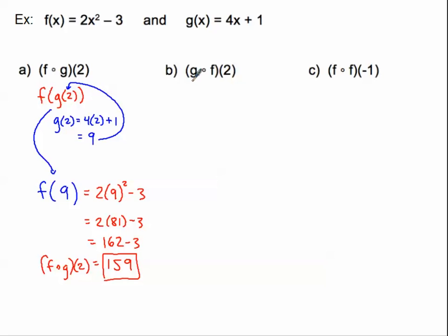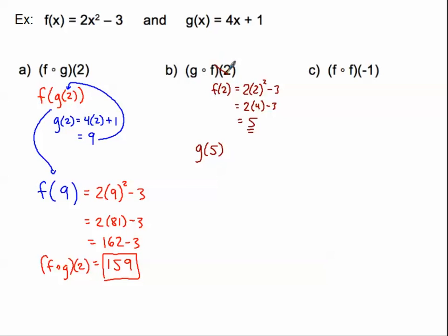Now we're talking about g of f of 2 — it's the exact reverse. Some people might think we get the same number, but that's not necessarily true. The first thing I'm looking at is what f of 2 is. Using the f function: 2 times 2 squared minus 3 equals 2 times 4 minus 3, which is 8 minus 3, which is 5. So g of f of 2 becomes g of 5. Now plugging 5 into the g function: 4 times 5 plus 1 is 21. So g of f of 2 is equal to 21.